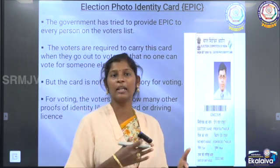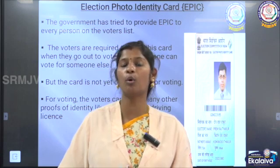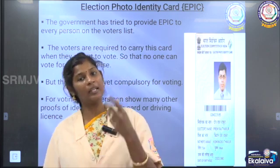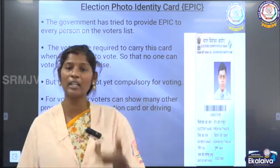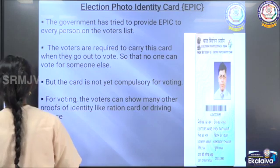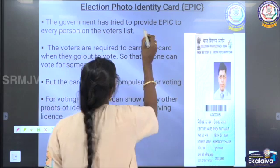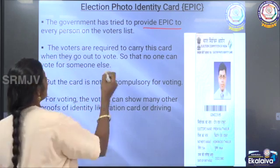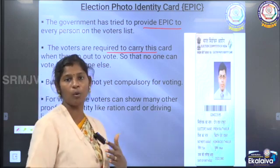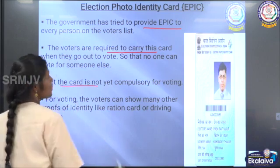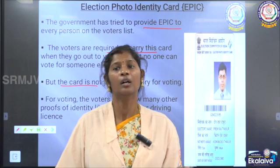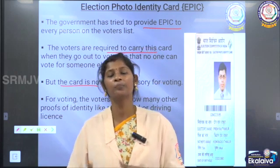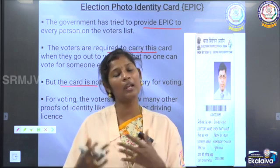During an election day, people who are eligible to cast their vote can take their Election Photo Identity Card (EPIC) and go to the nearby polling booth to cast their vote. The Election Commission has tried to provide EPIC to every person named on the voters list. However, this card is not yet compulsory for casting a vote, as voters can give any other proof of identity — like a smart card or other identity cards available.